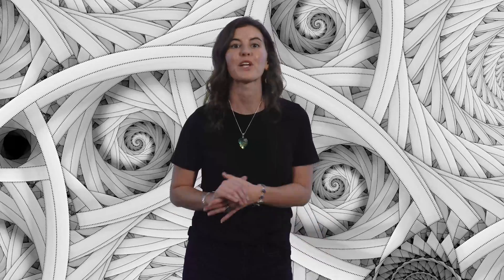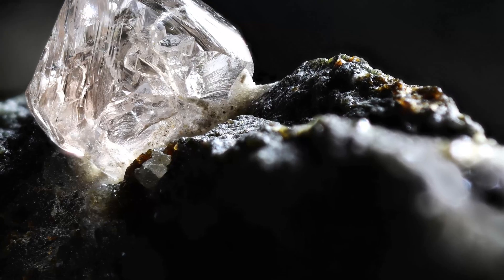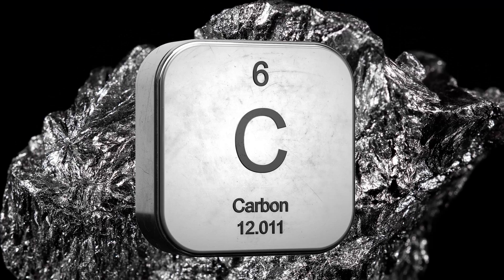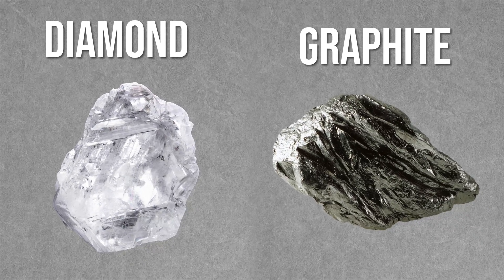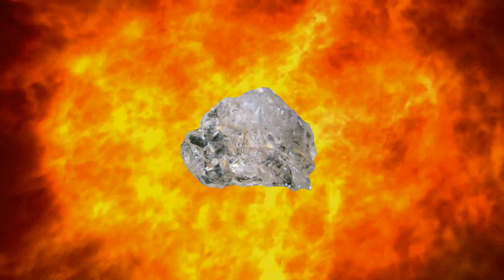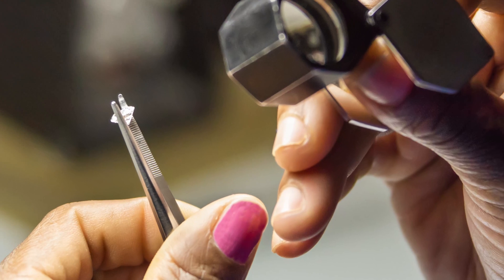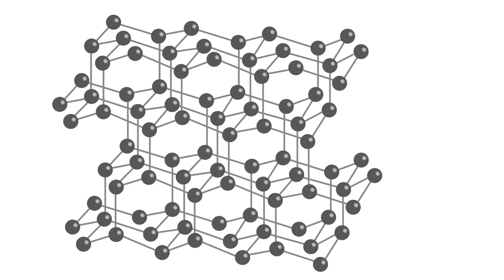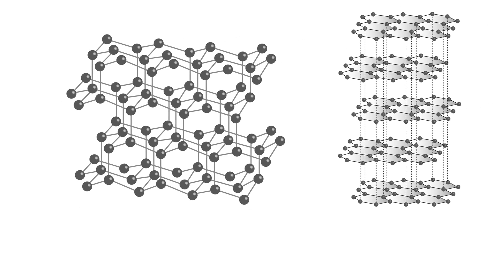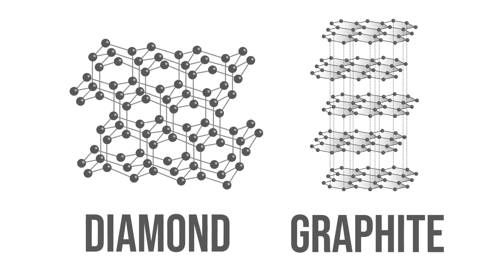Then we have polymorphs, where you can have more than one crystal structure for minerals with the same chemical composition. A common example of this is diamond and graphite. Both are pure carbon through and through, but they couldn't be more different. It's hard to believe that these two minerals have the same chemical composition, but that's polymorphs for you. Diamonds form under immense heat and pressure, much more violent than graphite. As a result, diamond has a renowned hardness of 10, due to its strong lattice of atomic bonds. Graphite, on the other hand, slides apart along weakly connected sheets of atoms.